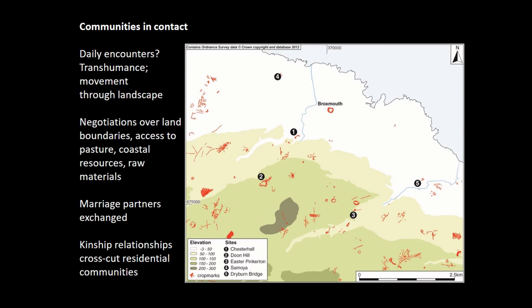One of the things we know from Broxmouth is that the community had a mixed farming economy and was very likely involved in transhumance, taking animals into the uplands. As soon as you start moving from Broxmouth, within a few kilometers you've hit another one of these big settlements. If you want to take your animals up into the uplands, you're going through territories associated with other hillforts. You'll have daily encounters moving through the landscape, and all of these relationships have to be carefully negotiated. These communities are fairly substantial — perhaps a few hundred people — but they're not self-sufficient biologically; marriage partners have to be exchanged, and kinship relationships between these communities will be very complex and will cross-cut residential communities.